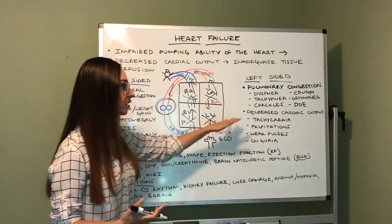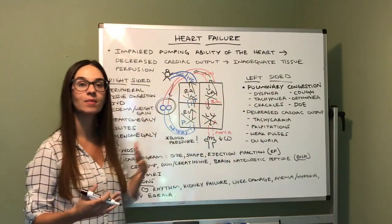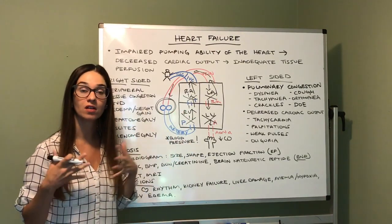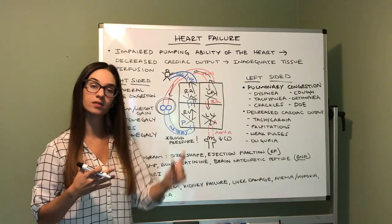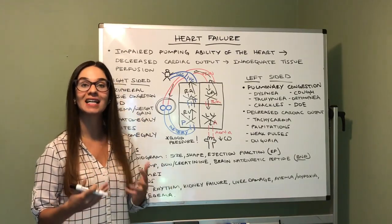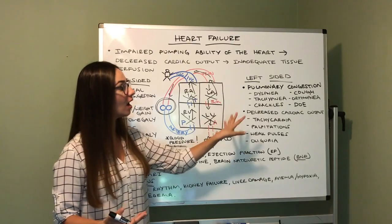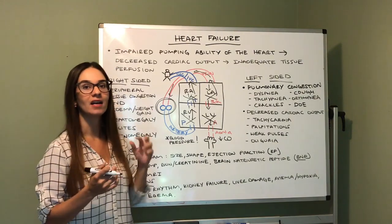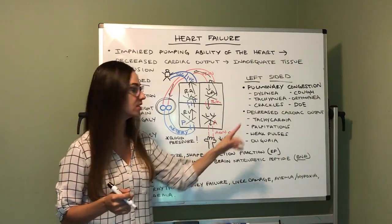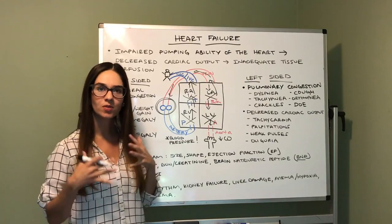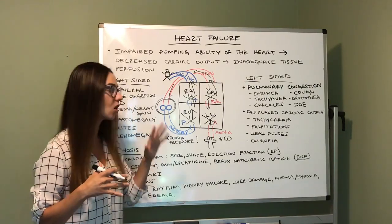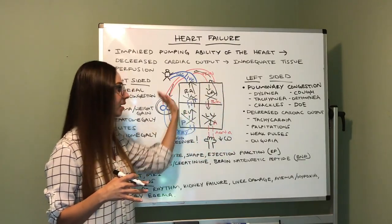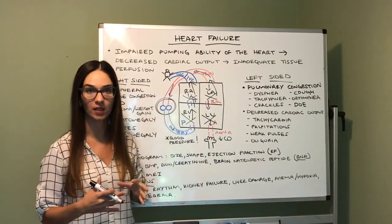So how does somebody with pulmonary congestion look? Dyspnea, tachypnea — elevated respiratory rate — crackles. We have too much fluid in our lungs; we don't want fluid in our lungs. When we auscultate with our stethoscope, we can hear an adventitious breath sound called crackles. Cough, orthopnea — difficulty breathing while laying flat — dyspnea on exertion (DOE). All of those respiratory symptoms associated with heart failure are related to blood backing up into our lungs causing pulmonary congestion.